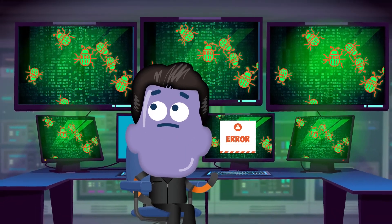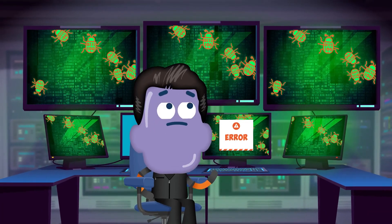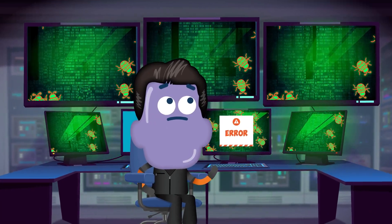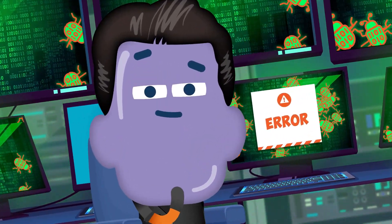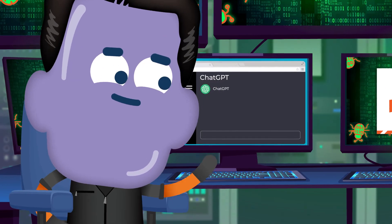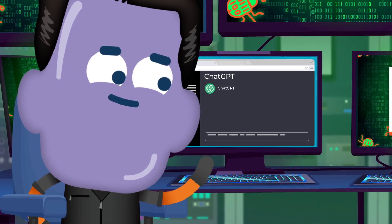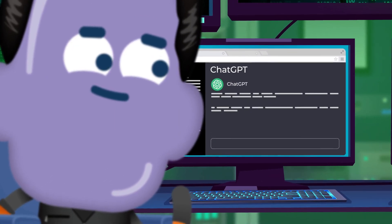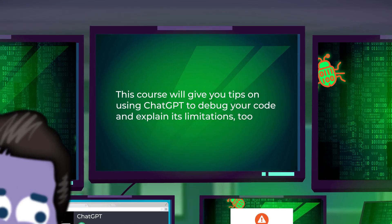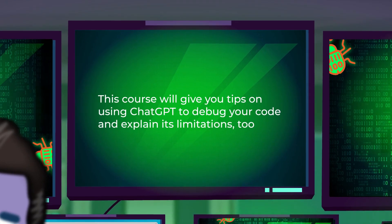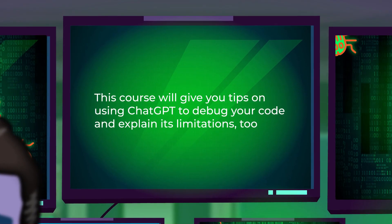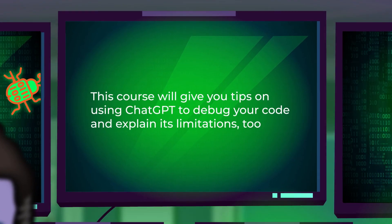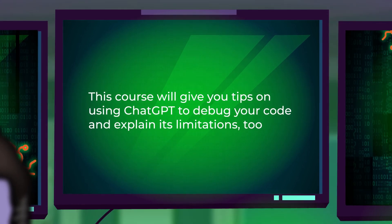Finding and resolving bugs in your code can feel like searching for a needle in a haystack. That's where AI can help. It'll take the pain out of finding errors in your code by troubleshooting and debugging it in a fraction of the time. This course will give you tips on using ChatGPT to debug your code and explain its limitations too.